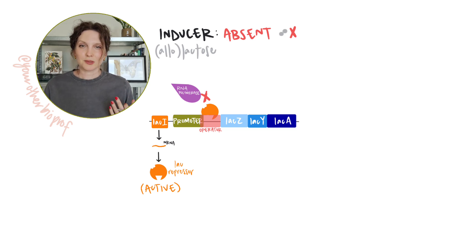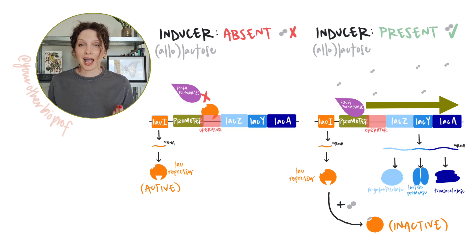When lactose is present, some of that lactose is converted into allolactose, which acts as an inducer, binding the repressor protein, inactivating it, which then clears up the path for RNA polymerase to transcribe the structural genes. Cool, we've got lactose metabolism now.